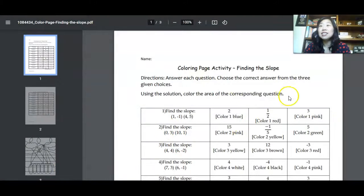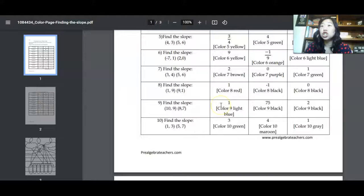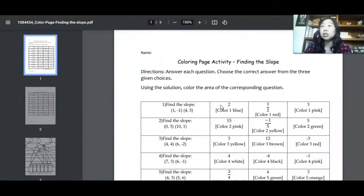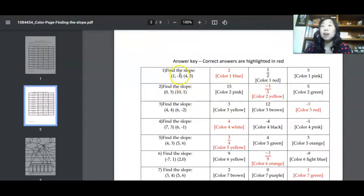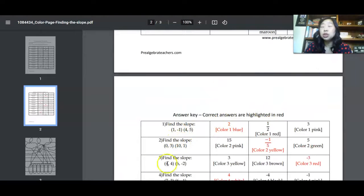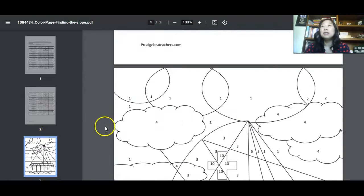The first activity is finding the slope coloring page. So this activity is inside of the Pre-Algebra Teachers Middle School Math Membership and this activity is to get students to practice simply finding slope. So this is the sheet and it comes with an answer key and this is the coloring page. So the way that this works is number one, since the answer is two, your students are going to find all of the ones on the sheet and color it blue. And number two, they will work it out and find that the answer is negative one-fifth and they will color all the twos yellow. So on and so forth. I love a coloring page because not only is it engaging, but it is super relaxing for our students.